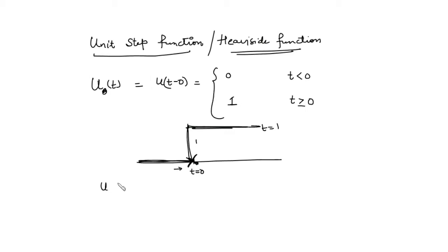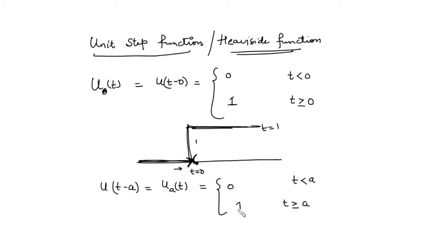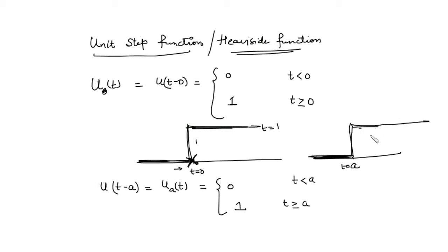We can also define a unit step function at any point 'a', meaning the discontinuity occurs at 'a'. Before 'a' the value of the function is 0, and after 'a' the value of the function is 1, so discontinuity occurs at t=a.